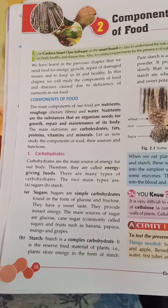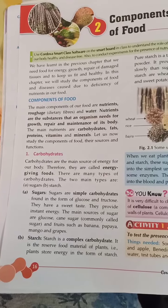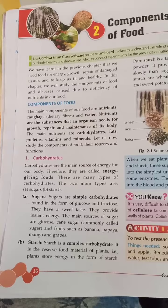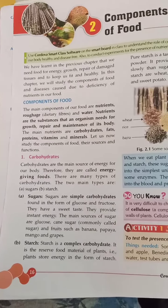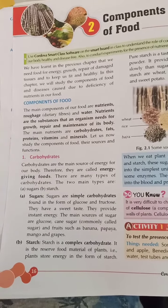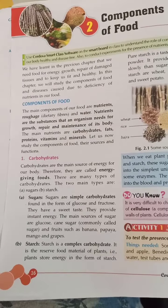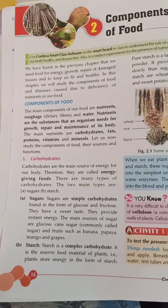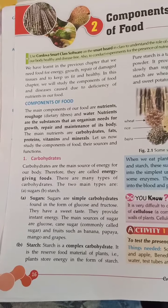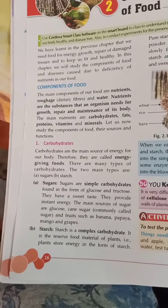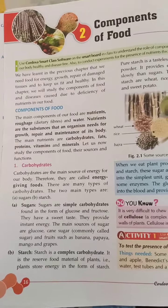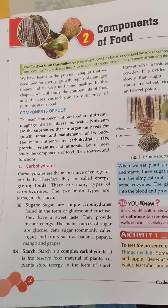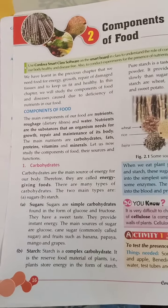Simple sugars like glucose and fructose have a sweet taste and are called simple carbohydrates. The main sources of sugar are glucose, sugarcane (commonly called sugar), and fruits such as banana, papaya, mango, and grapes.